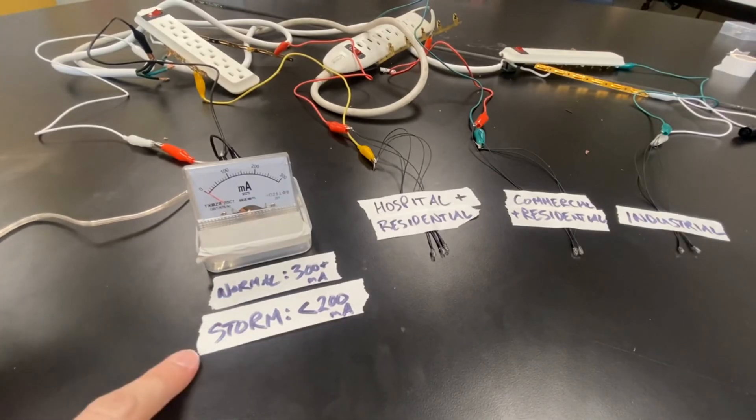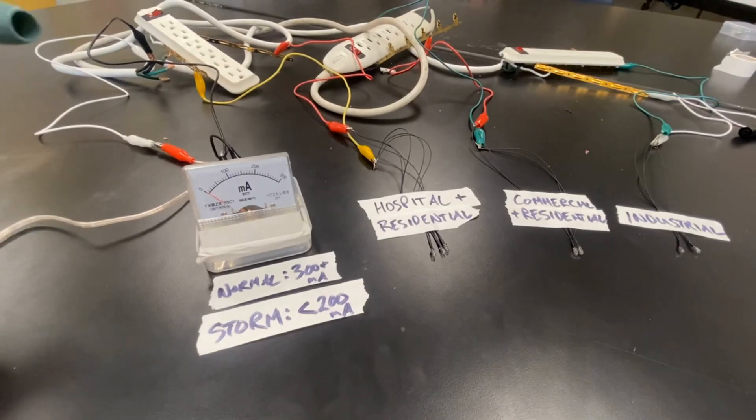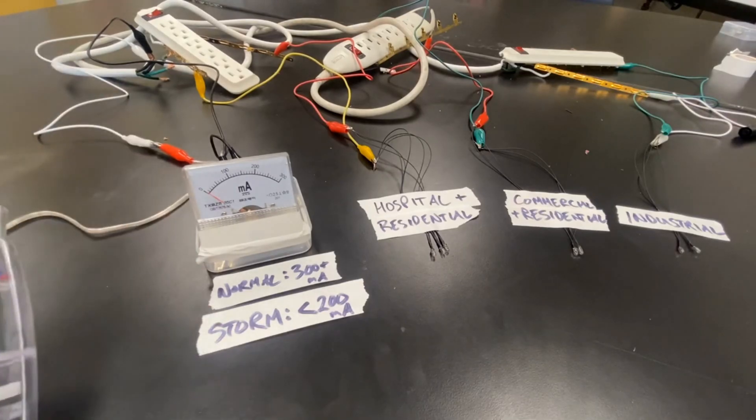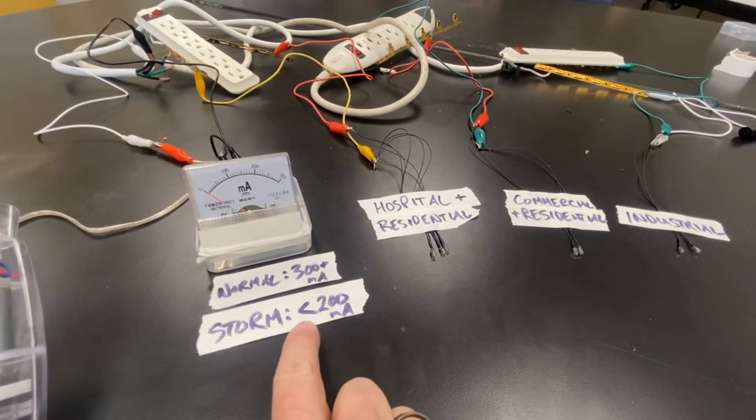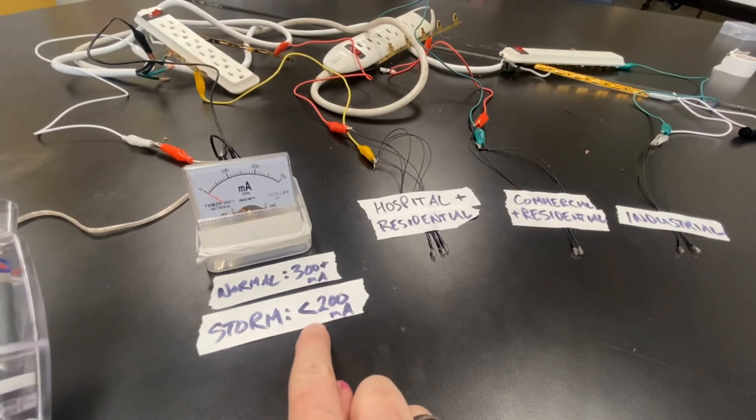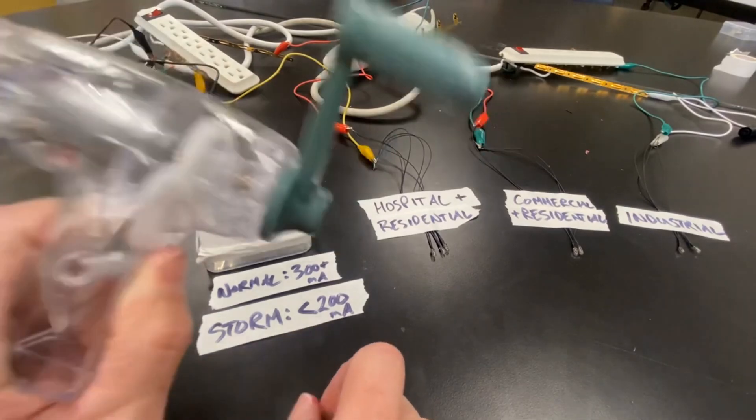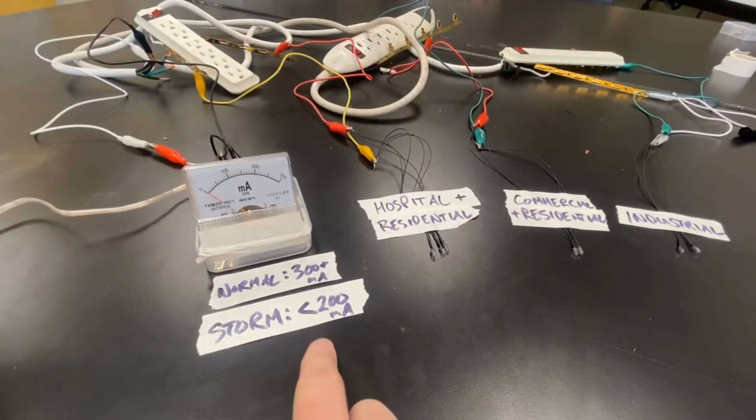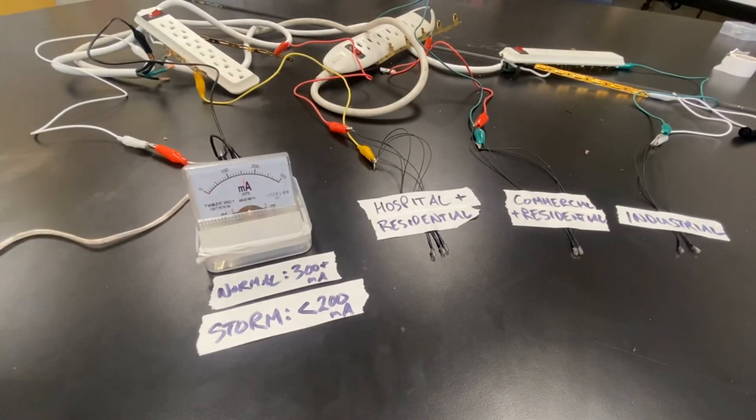Now, when there's a storm, we know that supply is decreased. And let's say for the sake of argument here that we can't get more than 200 milliamps out of our generator during the storm. So you'll notice if I crank this so that it is around 200 milliamps, none of the districts turn on. And that's a problem because we don't have enough power to go around.